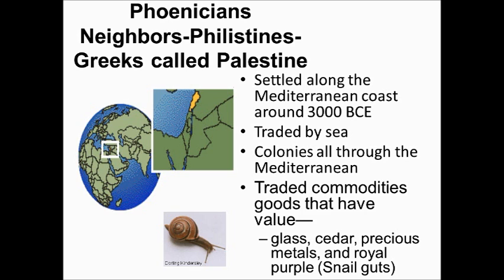The cool thing is where they made the dye for the royal purple cloth. They took snail guts and squeezed them into a bucket to make the dye. I don't think it was any different than any other purple, but somebody did a great sales job because all the wealthy people wanted the royal purple cloth.